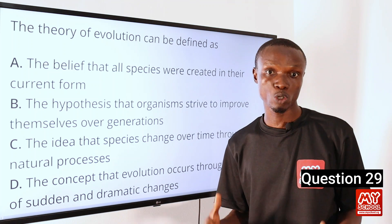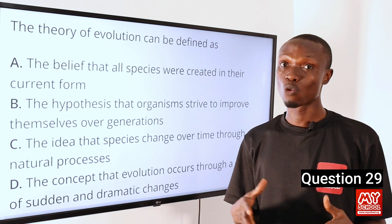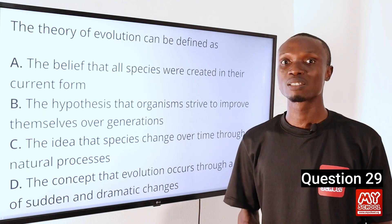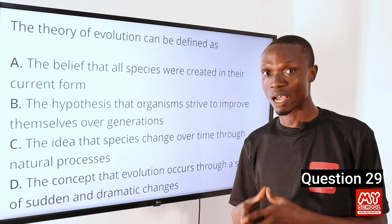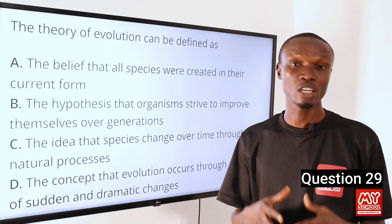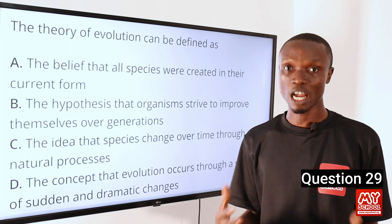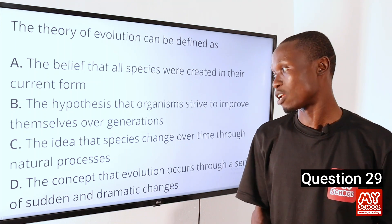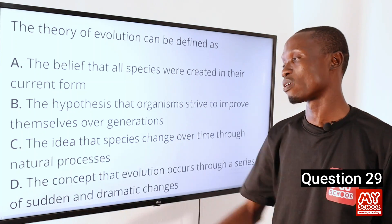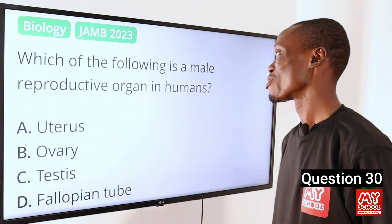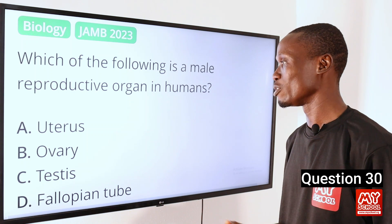The theory of evolution was proposed by Charles Darwin and Alfred Russel Wallace in the 19th century, and the theory suggests that species change over time through a process known as natural selection. So that makes option C the correct option.